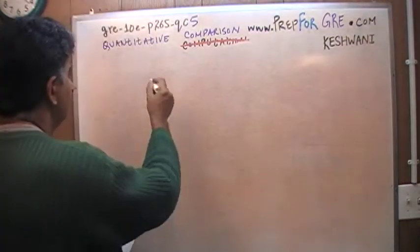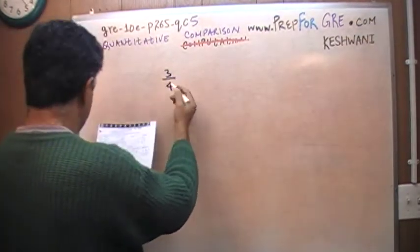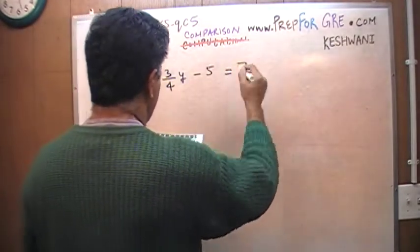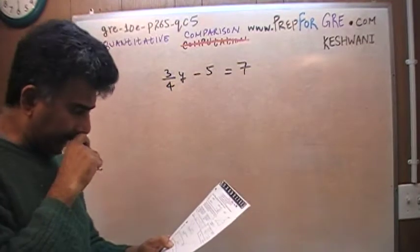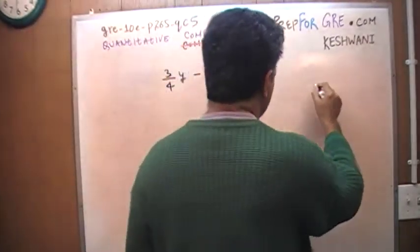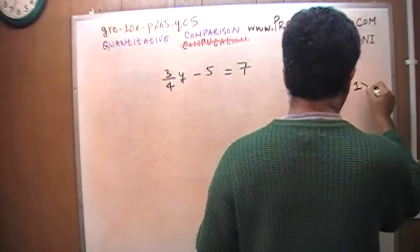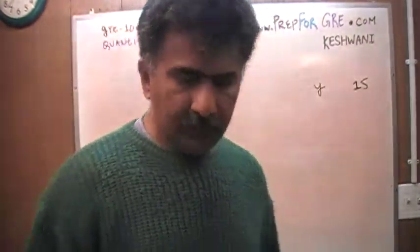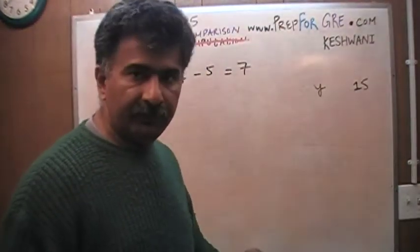Question is, 3 quarter y minus 5, we are told equals 7, and they want you to compare the quantity y versus 15. In other words, they want you to find what y is, whether it's more than 15 or less than 15 or equal to 15.